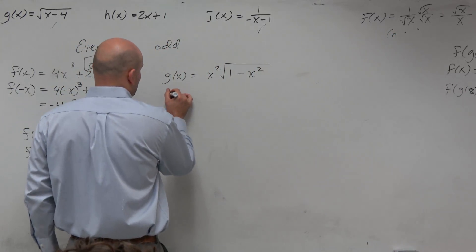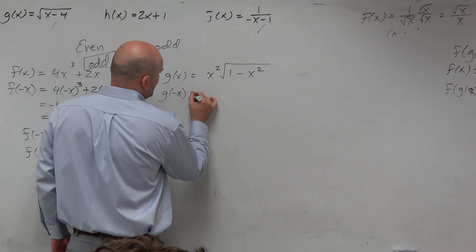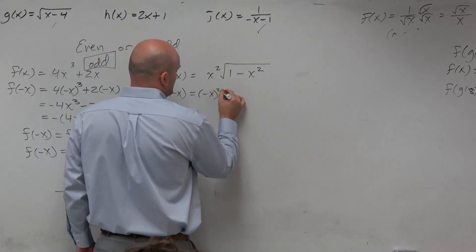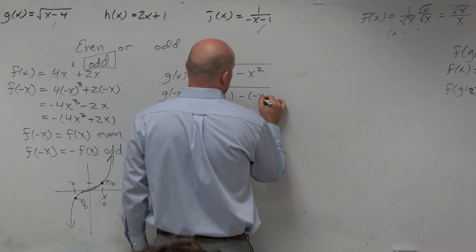All I have to do is plug in negative x. Let's plug in negative x. Negative x squared times the square root of 1 minus negative x.